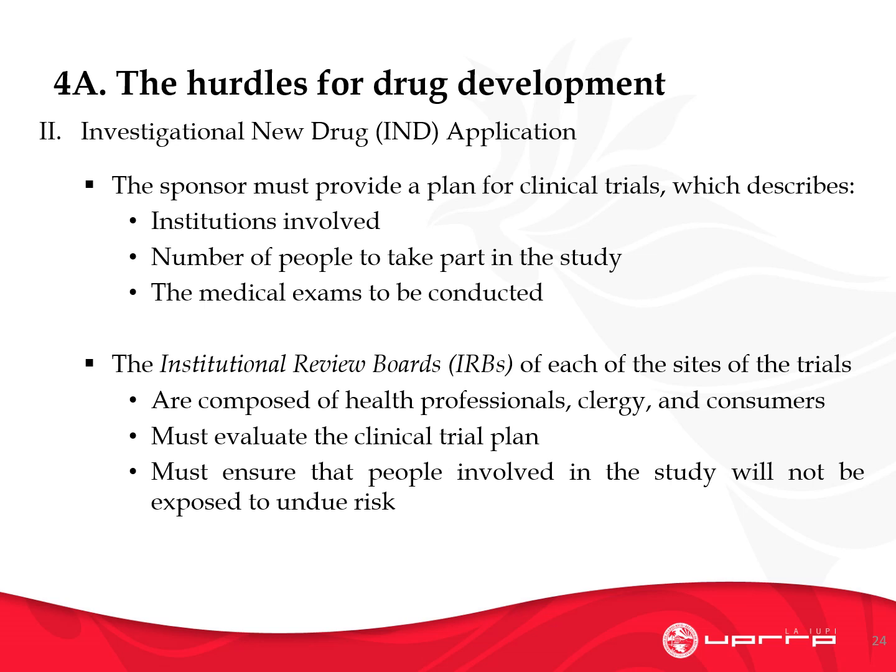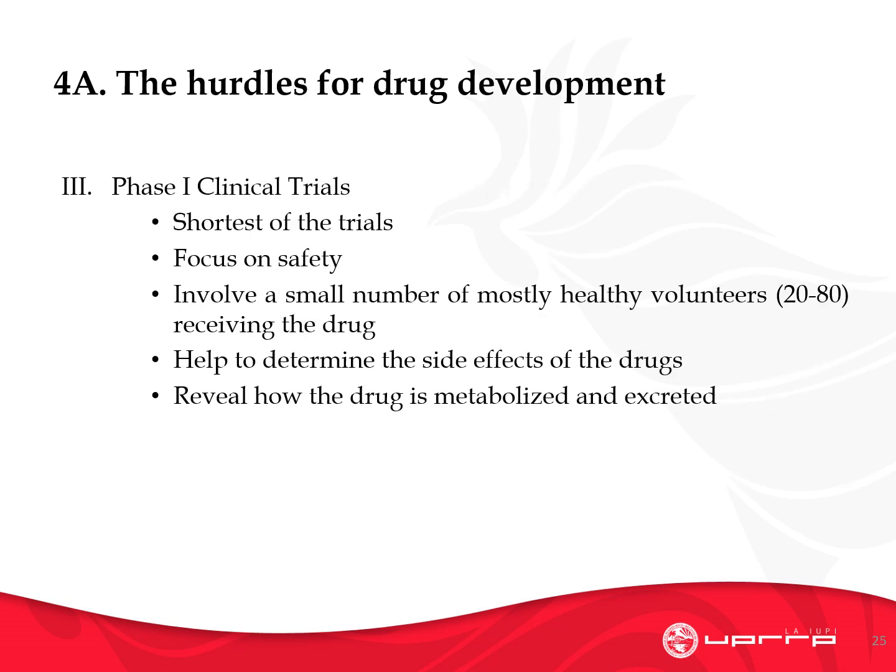The sponsor must provide a plan for clinical trials describing institutions involved — perhaps university researchers involved in development, and hospitals or health institutes working directly with patients — the number of people to take part, and the medical exams to be conducted. The Institutional Review Boards, or IRBs, of each trial site are composed of health professionals, clergy, and consumers. Often you have people outside the given institution to provide an unbiased opinion. The IRB must evaluate the clinical trial and ensure that people involved in the study will not be exposed to undue risk. Phase one — the shortest trial — is specifically focused on human safety. It involves a small number of mostly healthy volunteers, helps determine side effects, reveals how the drug is metabolized and excreted, and reveals the amount the human body can tolerate without inducing toxic effects.